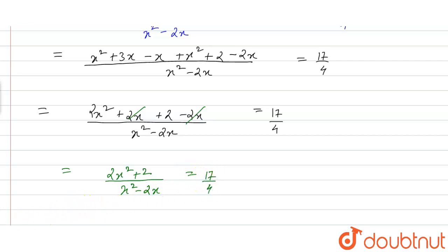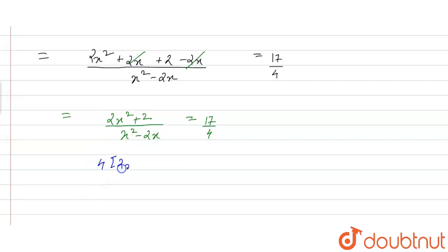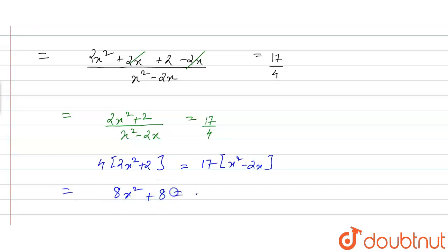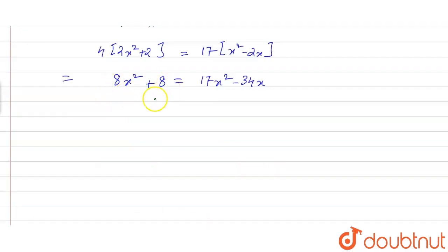On cross multiplying, we have 4(2x² + 2) = 17(x² - 2x), which gives 8x² + 8 = 17x² - 34x. Taking all terms to the RHS: 17x² - 34x - 8x² - 8 = 0, so 9x² - 34x - 8 = 0.